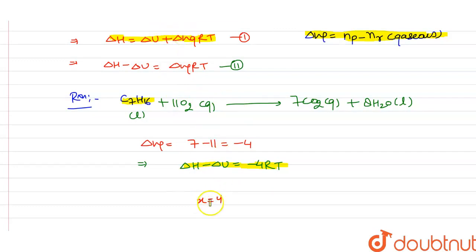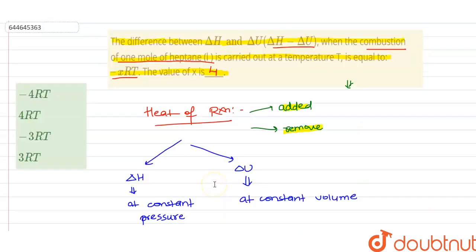So from this, what we can say is if we just check our option, we can say that it will be 4. So I hope you got this concept.